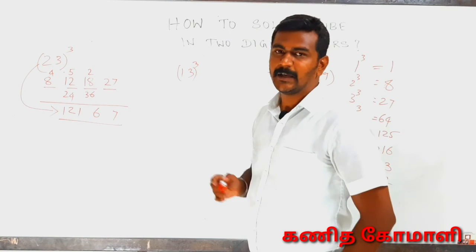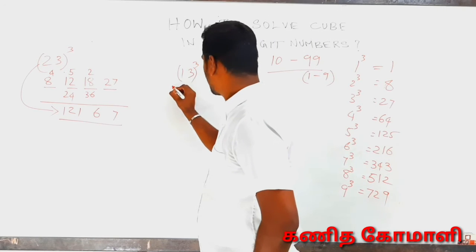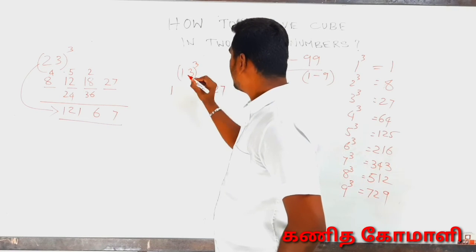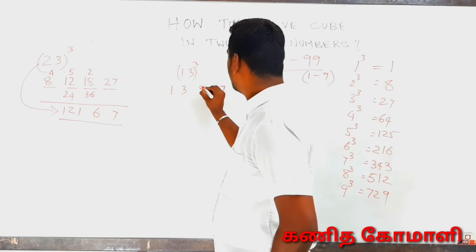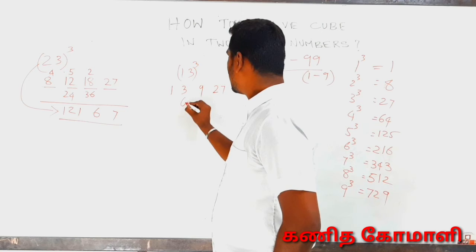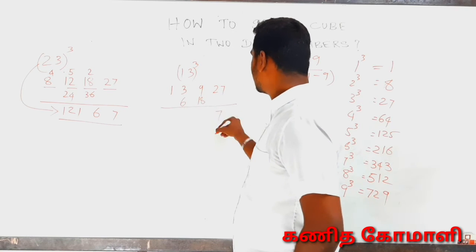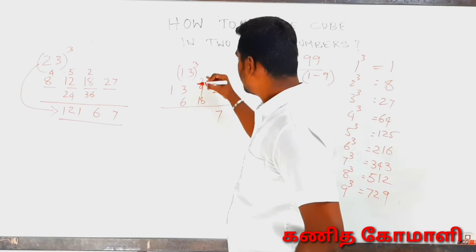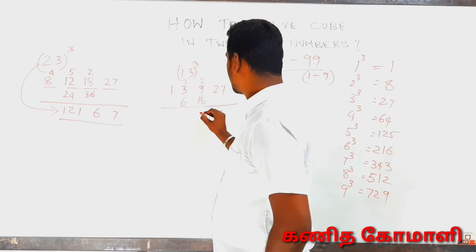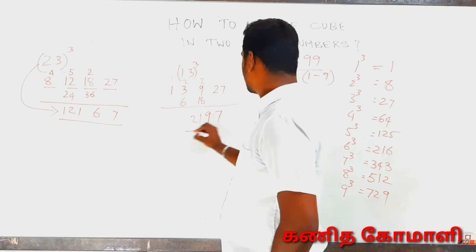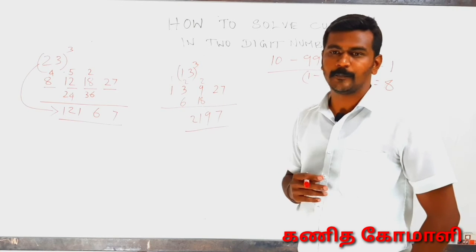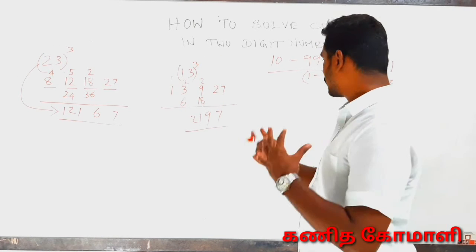Now 13 cube. You can write the answer easily: 1, 1, 3, 9. This is 3, 5. This is 10. Easy. Now we have 18. What do you do? 18, 7, 2. 18, 9. 6, 3, 9. 18, 1. 1, 3. The answer for 13 cube is 2197.